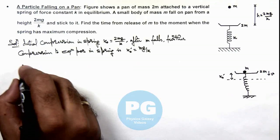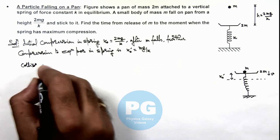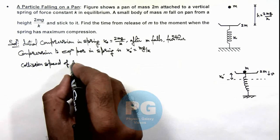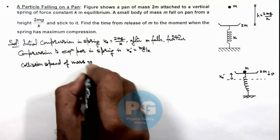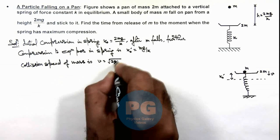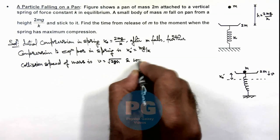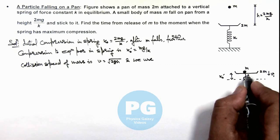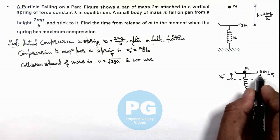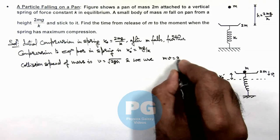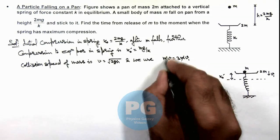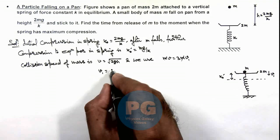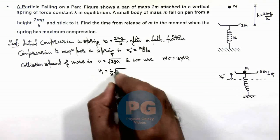The collision speed of mass m is v = √(2gh). Since m has an inelastic collision with mass 2m, we write mv = 3m·v₁, where v₁ is the speed with which the combined mass with the pan is moving. This gives v₁ = (1/3)√(2gh).